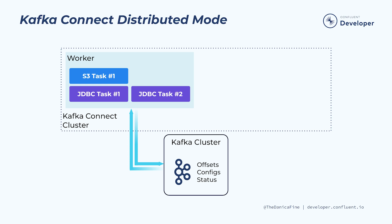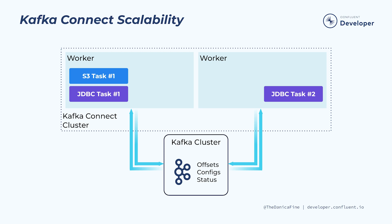In the distributed mode, Kafka Connect uses Kafka topics to store state pertaining to connector configuration, connector status, and more. The topics are configured to retain this information indefinitely, known as compacted topics. Connector instances are created and managed via the REST API that Kafka Connect offers. The distributed mode is the recommended best practice for most use cases. Since all offsets, configs, and status information for the distributed mode cluster is maintained in Kafka topics, this means that you can add additional workers pretty easily, as they can read everything that they need from Kafka.